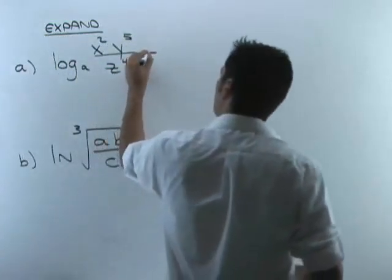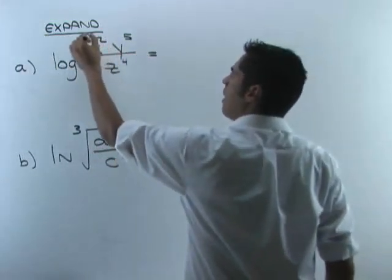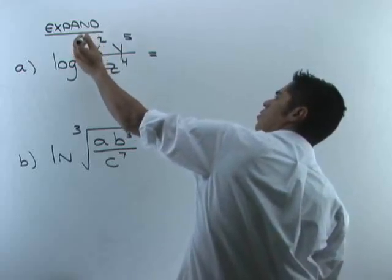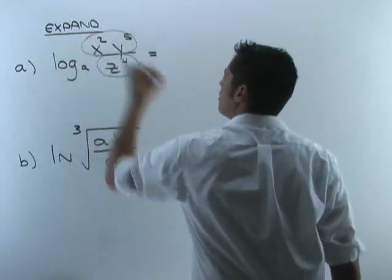So on this first one here, I'm going to say that this is equal to... Now look, we have division, right? Division means that we can turn it into two logs and turn it into subtraction.